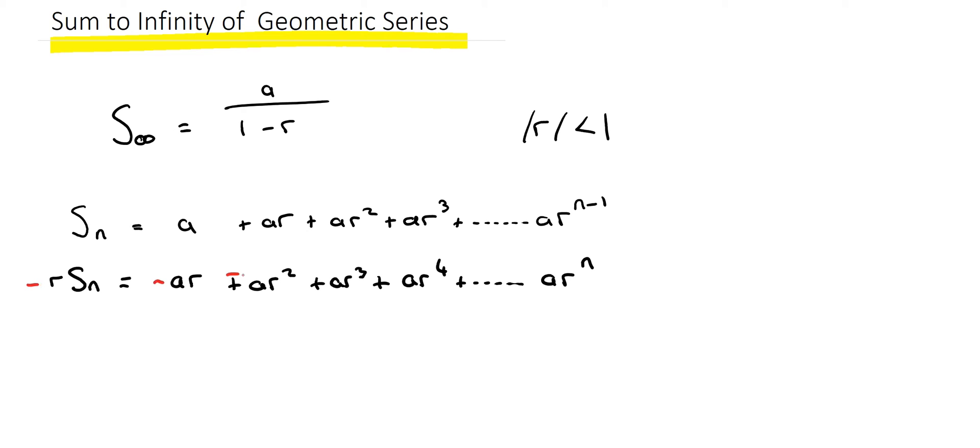Next step, so you don't need that for the proof, next step is to change the signs to minus and then subtract the bottom line from the top line. So you get Sn minus rSn is equal to, these two will cancel, these two will cancel, these two will cancel and so on.